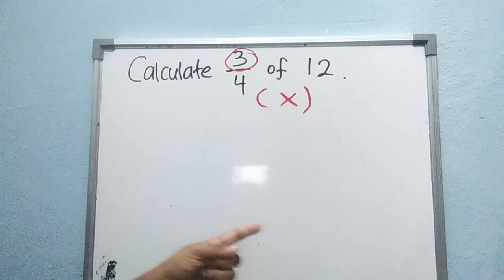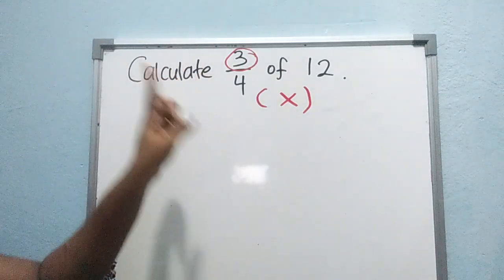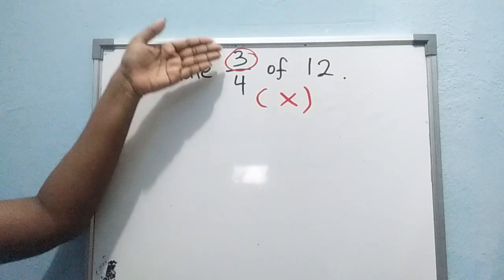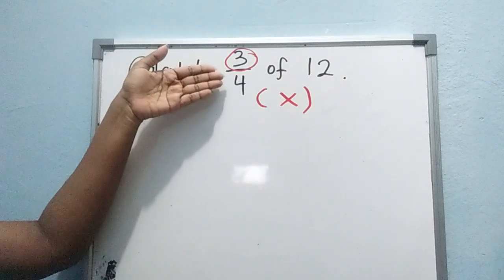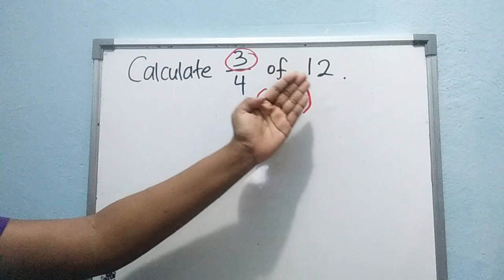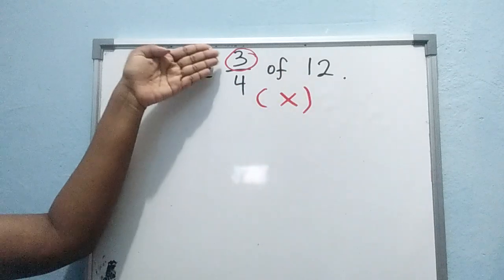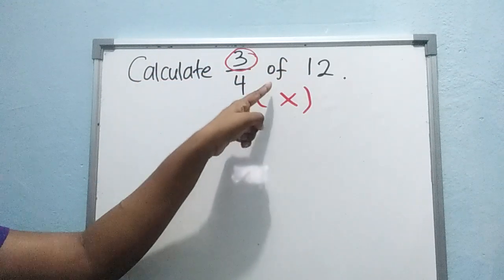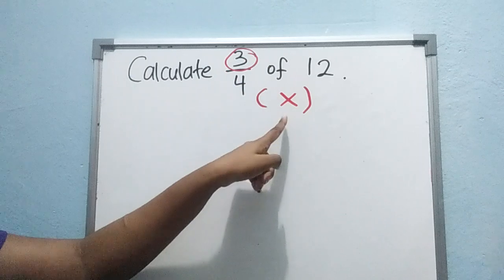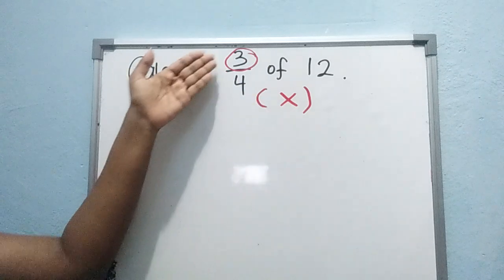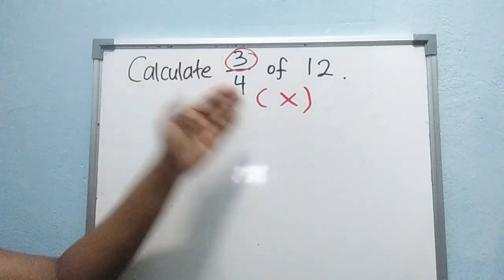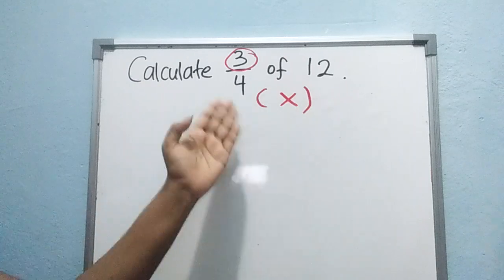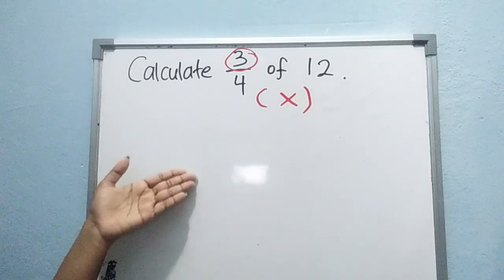Before we look at the steps, I want you to take note. The question sometimes will say '3 over 4 of 12', or it might not have the word 'of' — it will have 'times'. So '3 over 4 times 12'. Both are the same method.